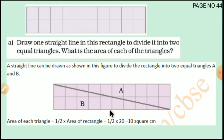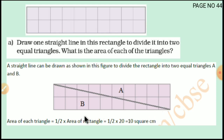Here is the straight line. Because of that, two triangles are formed. The area of each triangle is equal to one half multiplied by the area of the rectangle. The area of this rectangle is 20 square centimeter. So the area of each triangle equals one half multiplied by 20, which is equal to 10 square centimeter.